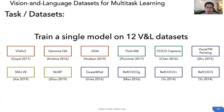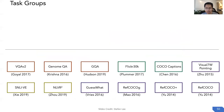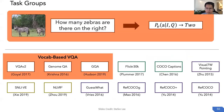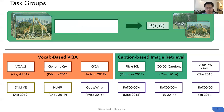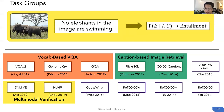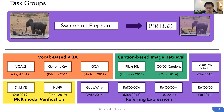We train a single model on 12 vision-language datasets across four task groups: vocabulary-based VQA (predicting answers given image and question) with VQA V2, Genome QA, and GQA; caption-based image retrieval (retrieving a target image from a pair) with Flickr30K and COCO Captions; multimodal verification (verifying statements about images) with Visual Entailment and NLVR2; and refer expressions (locating regions given a phrase, question, or dialogue) with several RefCOCO datasets, Visual 7W pointing, and GuessWhat.